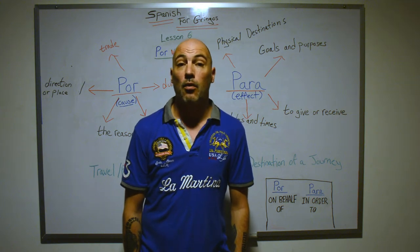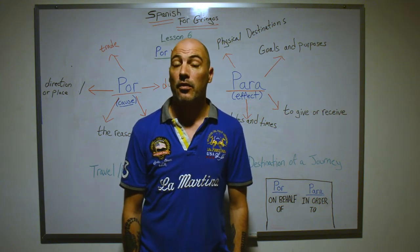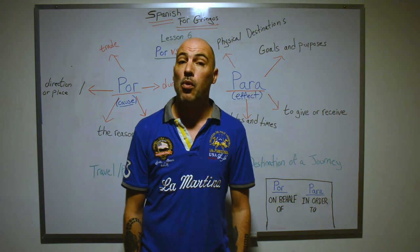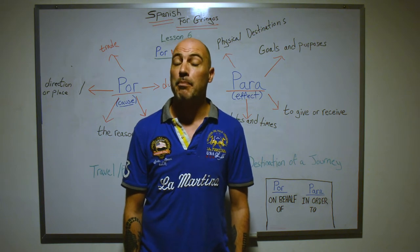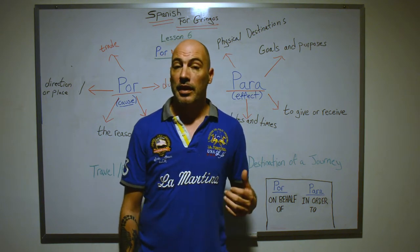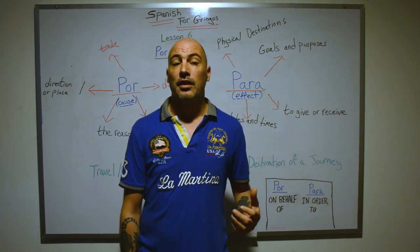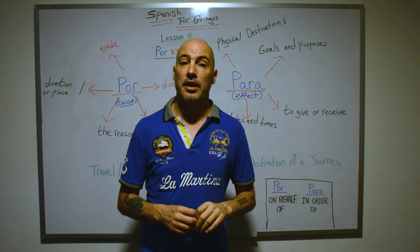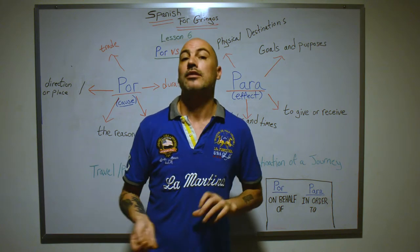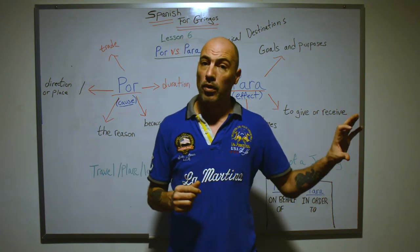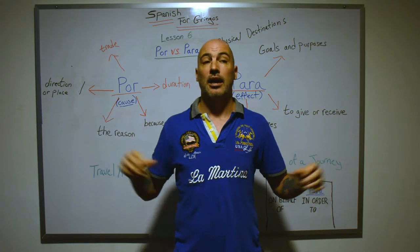Hello everybody and welcome to Spanish for Gringos. I am Marc and this is lesson six: por versus para. Now in Spanish, the word 'for' is represented by two words loosely — por and para.